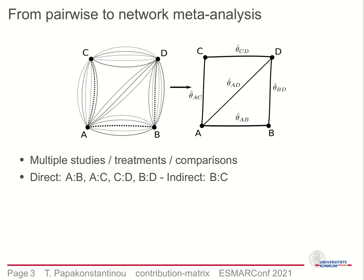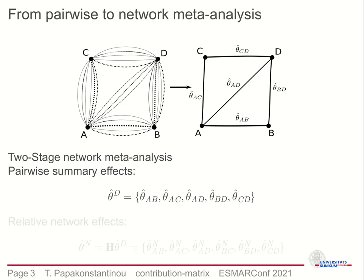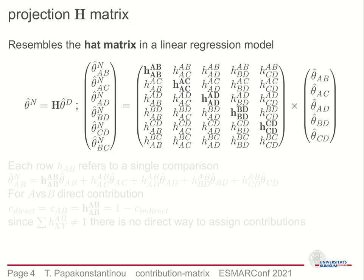Network meta-analysis can be performed as a two-stage regression model. In the first stage we perform classical pairwise meta-analysis to all comparisons with direct studies. In the second stage we combine the direct summary effects to derive the network summary effects, theta superscript N. The matrix that maps direct to network effects is called the H matrix. The H matrix is calculated exclusively by the variances of studies and resembles the H matrix of a linear regression model.